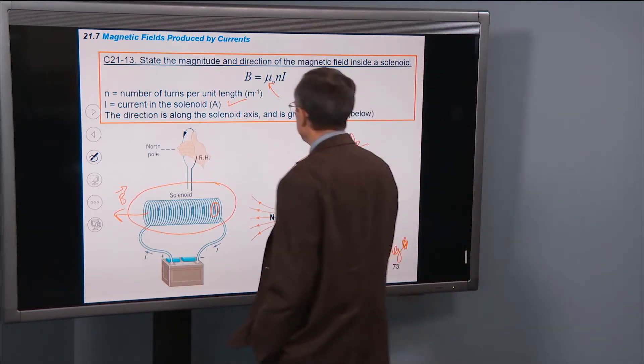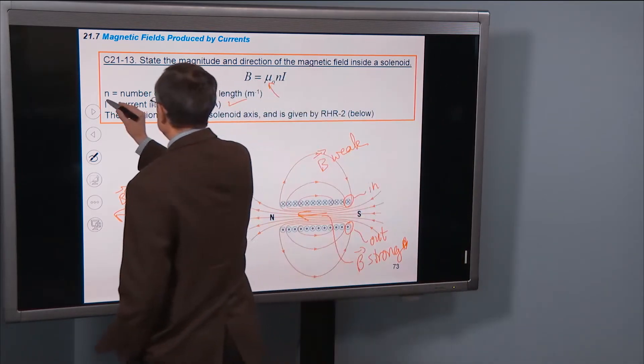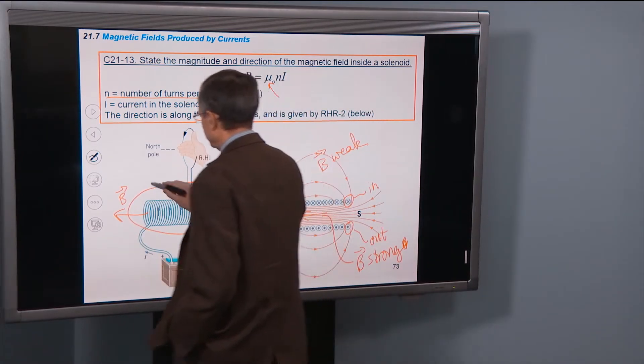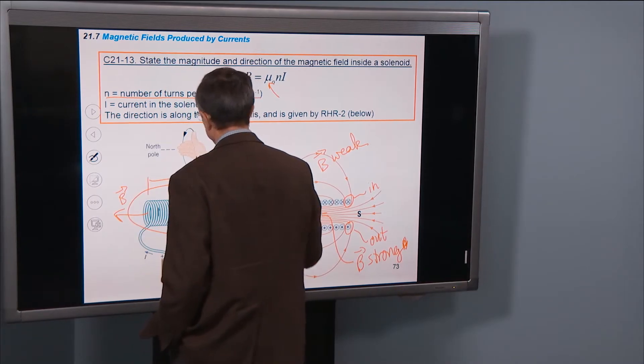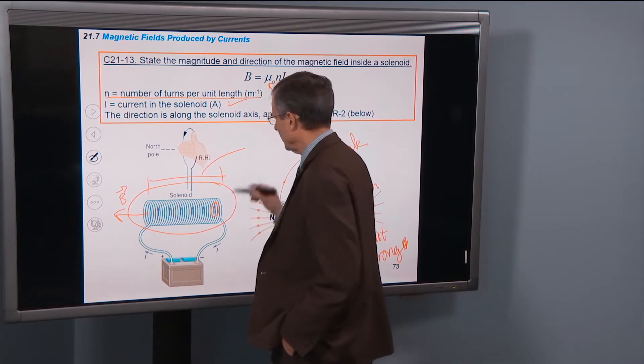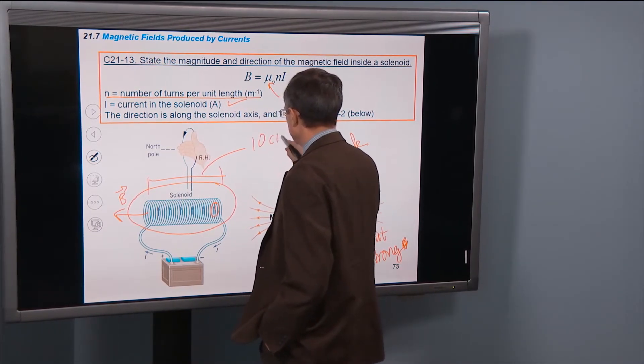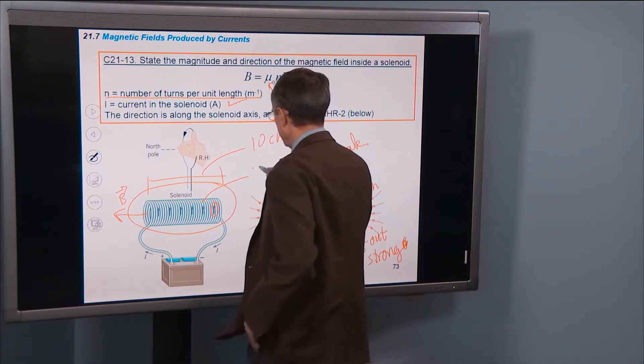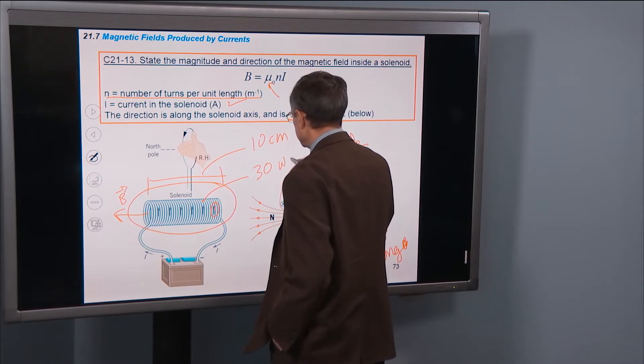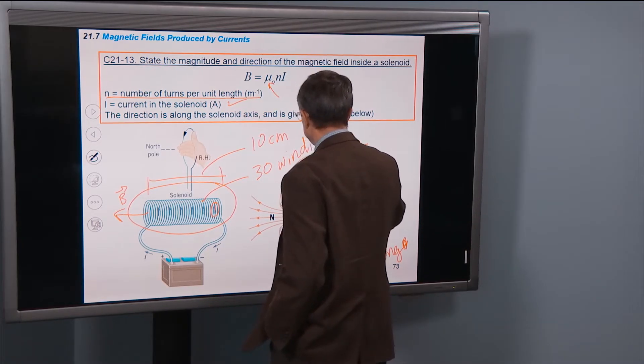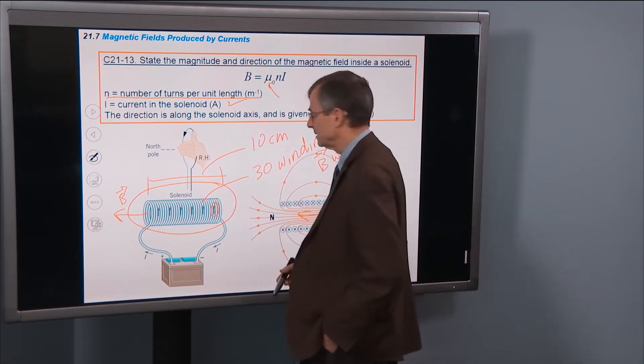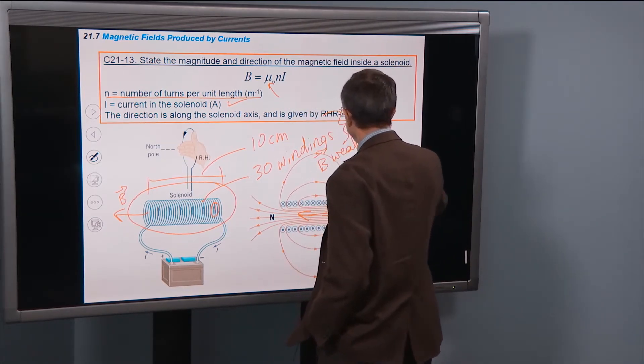And then the only new thing really here is the number of turns per unit length. So if you have a solenoid that's say 10 cm long, and let's say this looks to have maybe say 30 windings, the number of times you've wound this around, 30 windings, then in this particular case, little n,